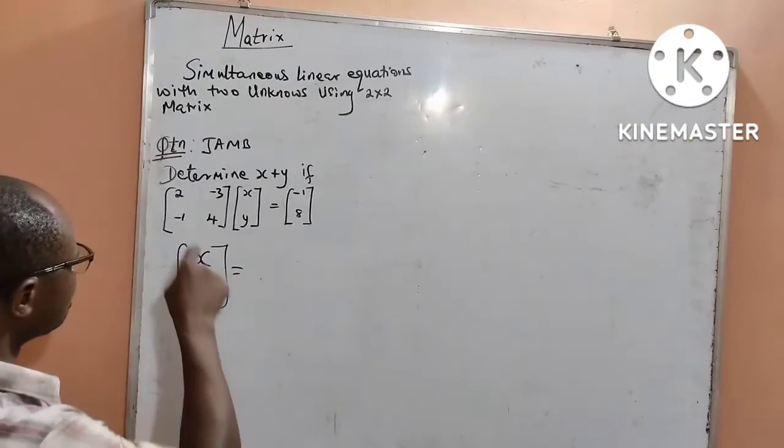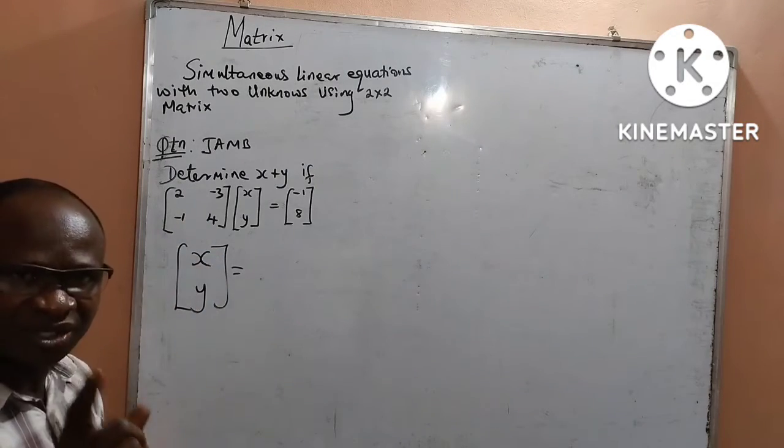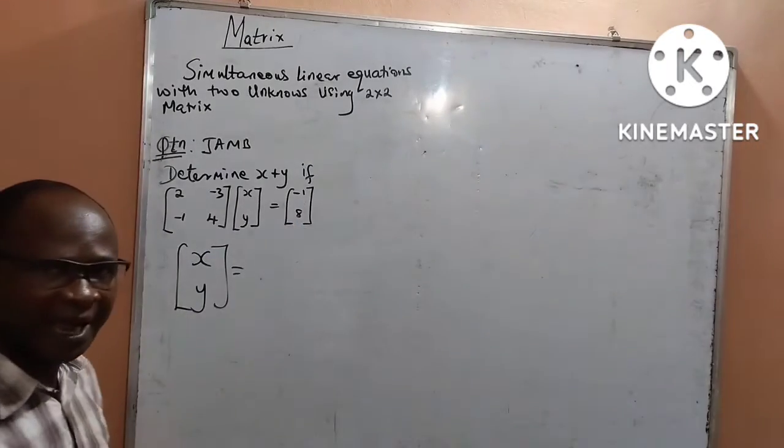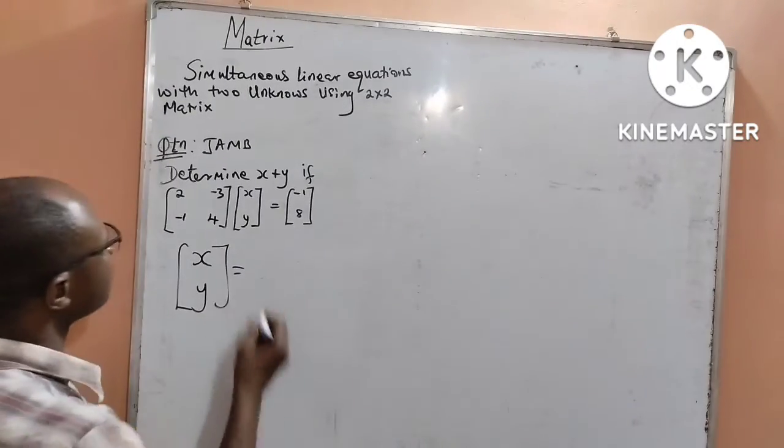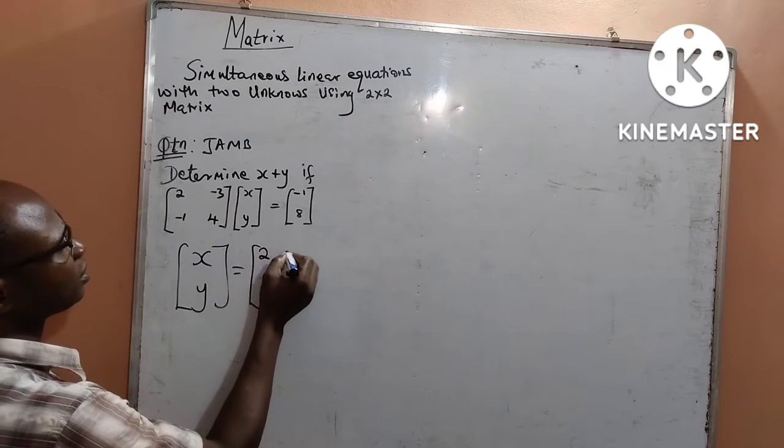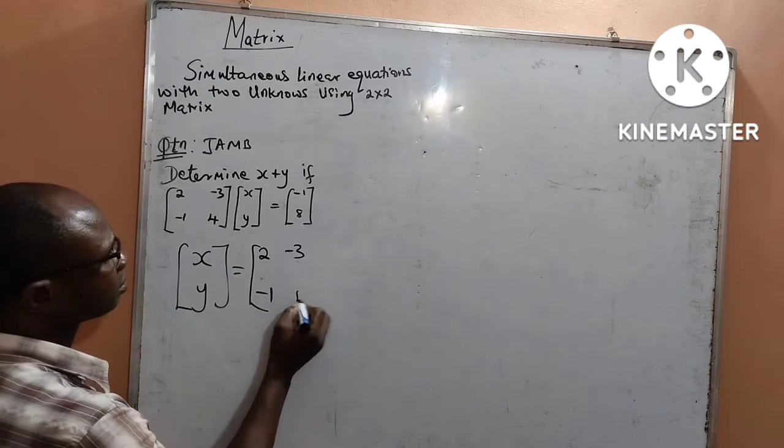The method is to find the inverse of this 2x2 matrix. When we get the inverse, we use it to multiply the 2x1 matrix, and that will give it to us.